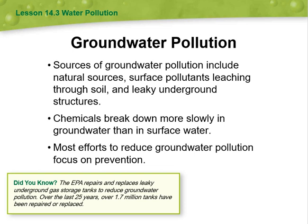Then we have groundwater pollution. Groundwater pollution occurs when harmful substances seep into underground water sources, contaminating them. This can happen due to various human activities such as improper waste disposal, industrial spills, or the use of certain chemicals. It poses a significant threat to the quality and availability of drinking water. It's important to take measures to prevent groundwater pollution to safeguard this vital resource for ourselves and future generations.